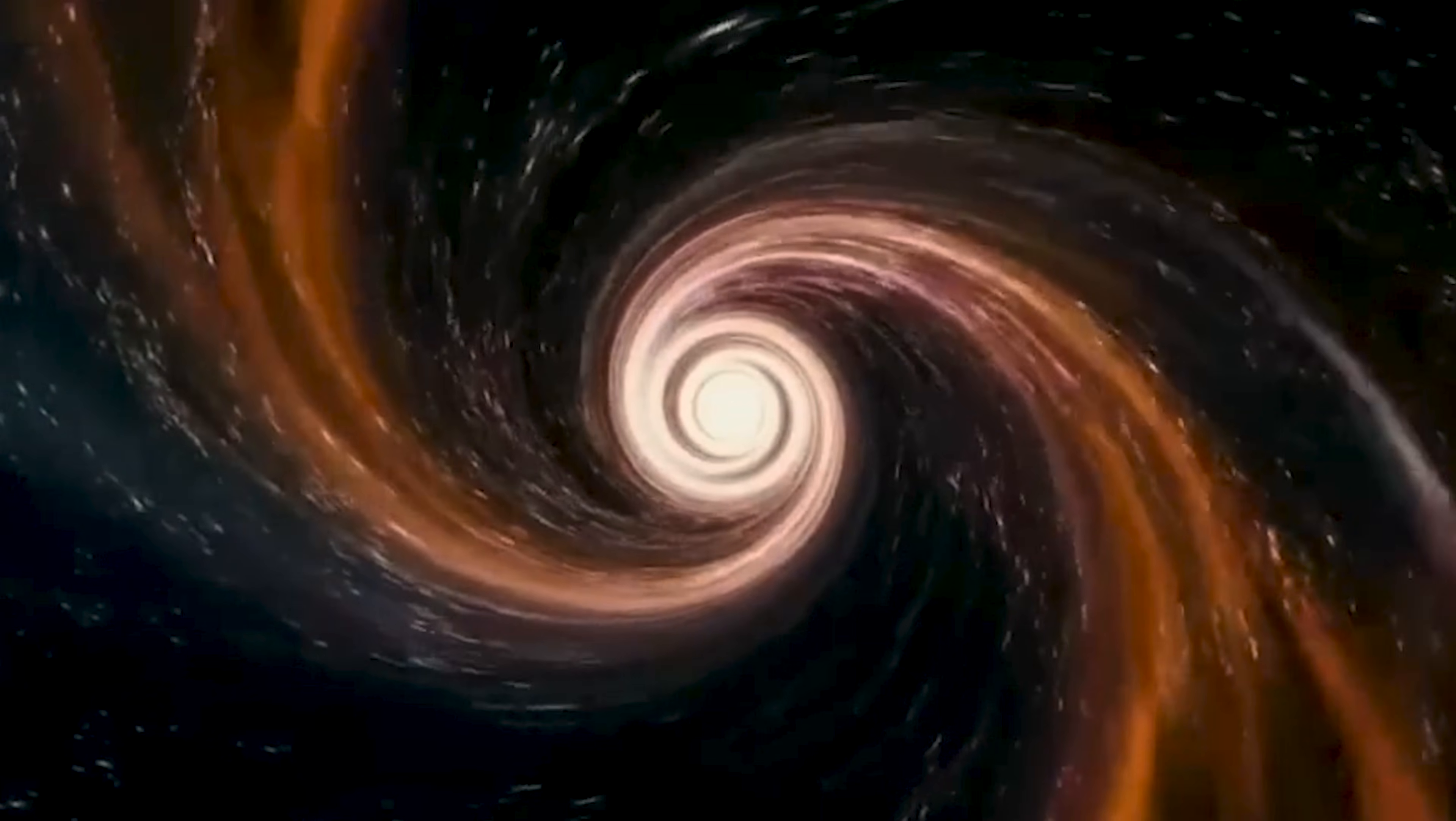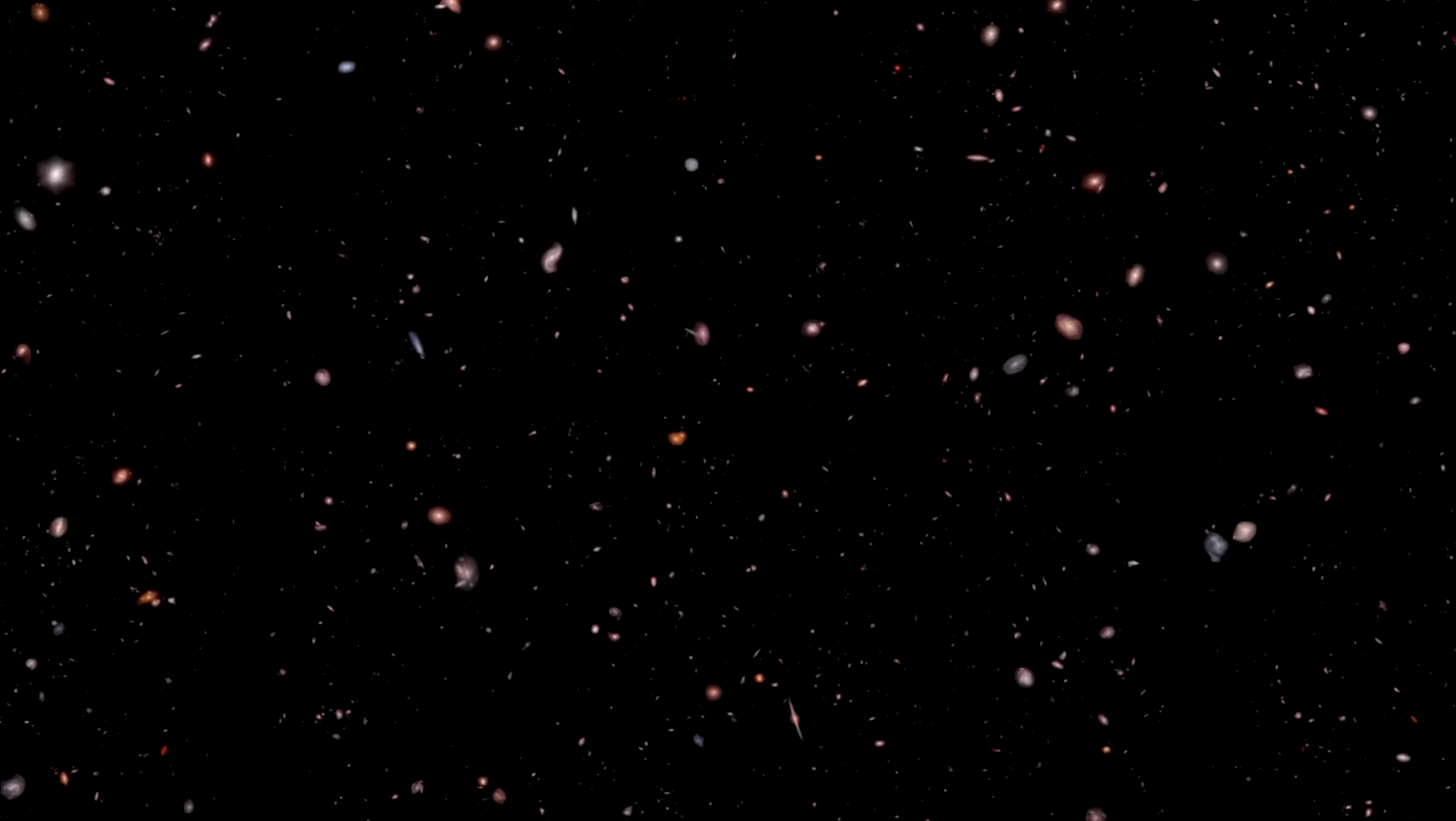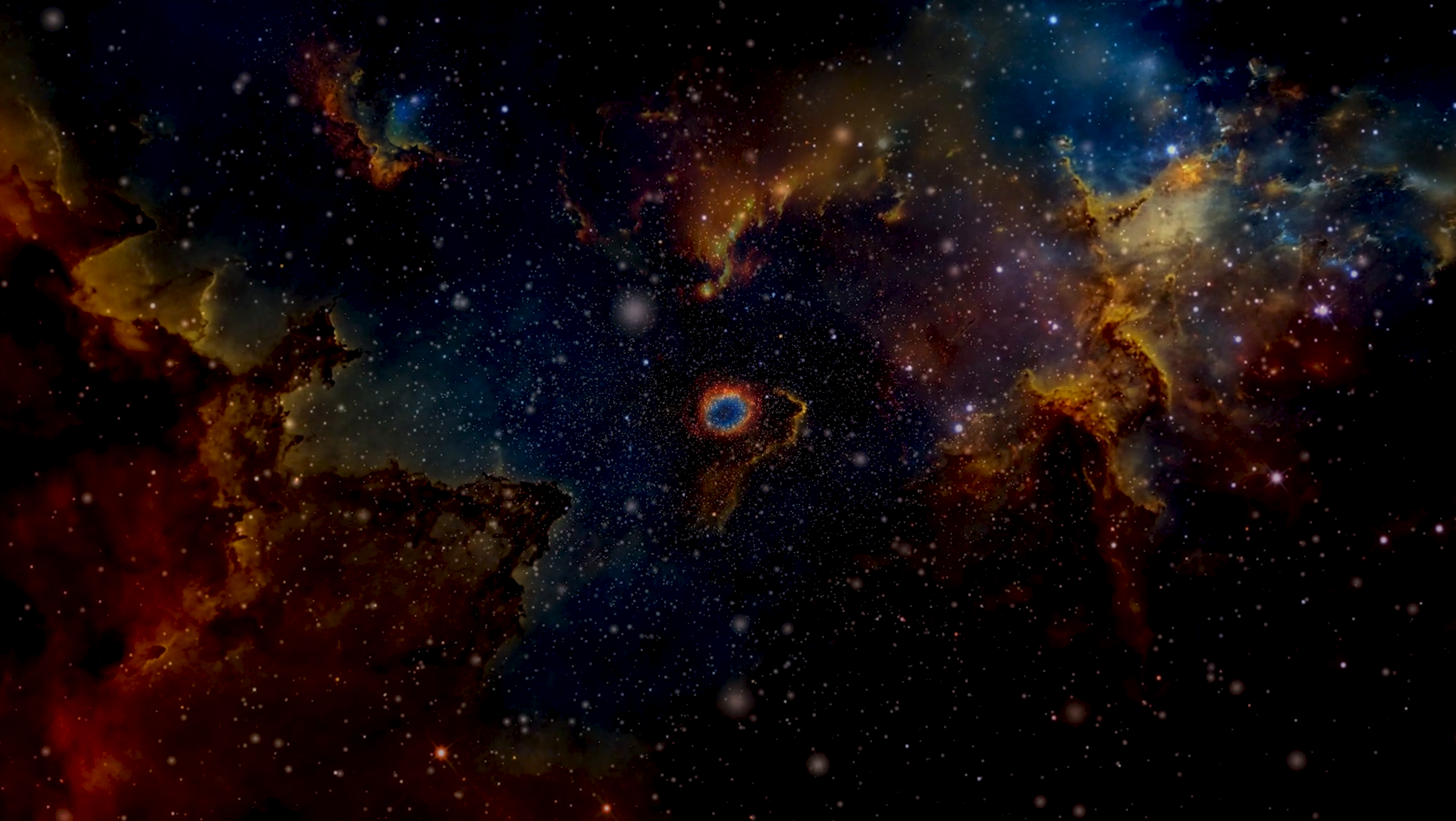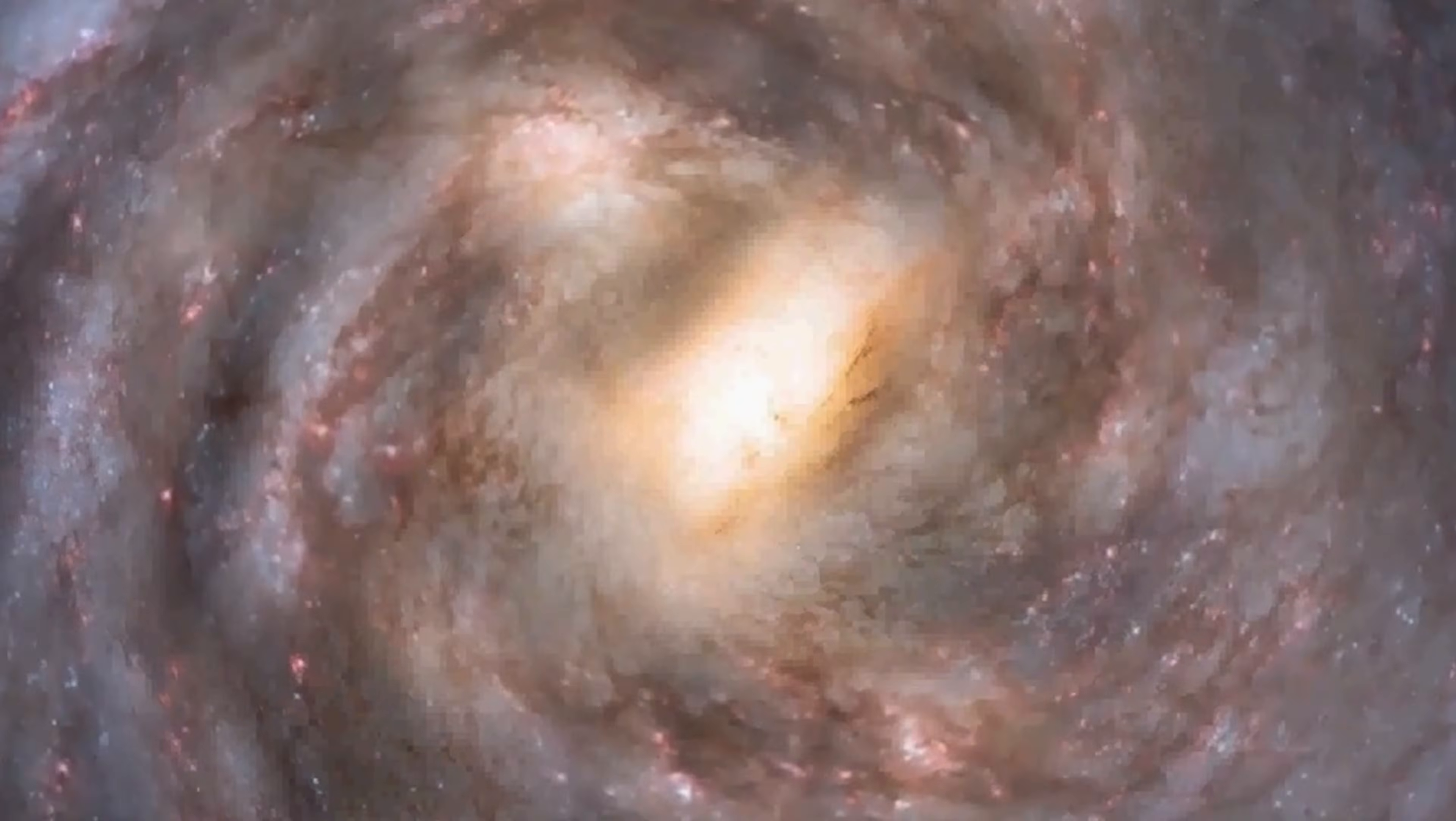Somewhere far beyond our horizon, entire regions of space exist that we will never see and never influence. If the universe is infinite, and evidence increasingly suggests that it is, then it was always infinite. The Big Bang didn't happen at a single point. It happened everywhere, all at once. Matter didn't emerge in one location and spread outward. It appeared throughout all of space simultaneously. And the cosmic microwave background we see in every direction is the afterglow of that event reaching us from all sides. That's the standard picture. But Webb may be forcing us to rewrite it.